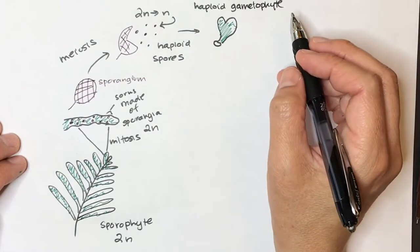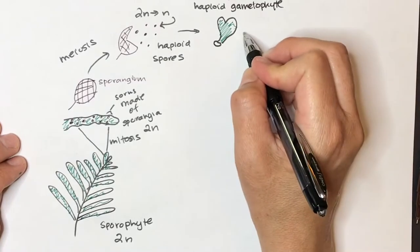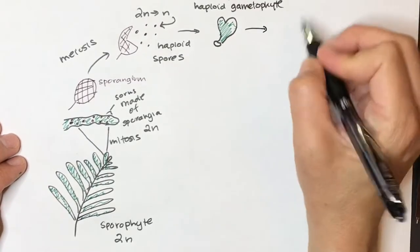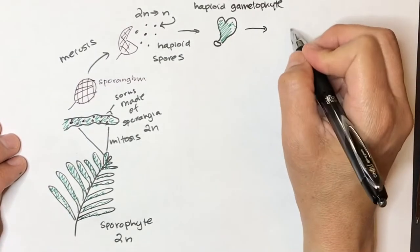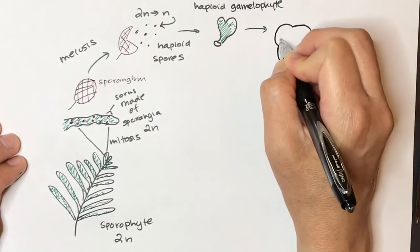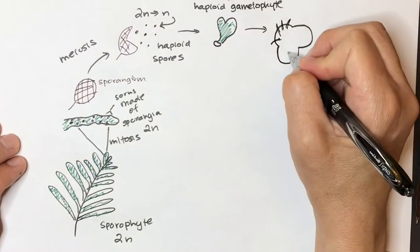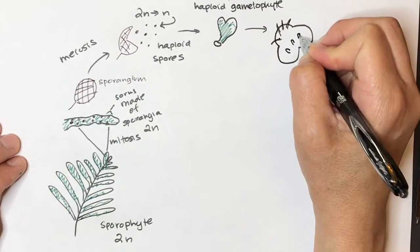This haploid gametophyte is going to form anthridia and archegonia on its underside. So if we kind of look at a mature one of these, we're going to flip it over onto its underside. It's going to have some little rhizoids to help to anchor it to the soil. And then it's going to have these little blebs on it.